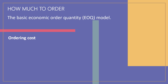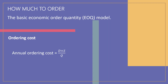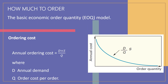Annual ordering costs will decrease as order size increases because, for a given annual demand, the larger the order size, the fewer the number of orders needed. In general, the number of orders per year will be D divided by Q, where D is the annual demand and Q is the order size. Because the ordering cost is treated as a constant, annual ordering cost equals D × S / Q, where D is demand (usually in units per year) and S is the ordering cost per order. Because the number of orders per year (D/Q) decreases as Q increases, annual ordering cost is inversely related to order size.